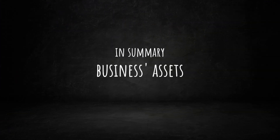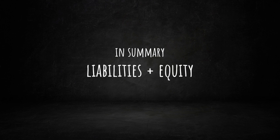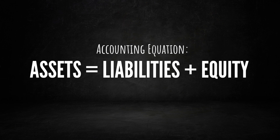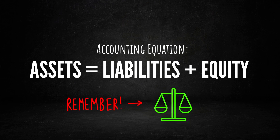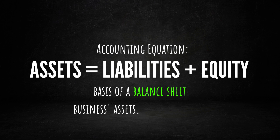In summary, we have learned that business assets are equal to its liabilities plus equity, forming the foundation of the accounting equation: assets equals liabilities plus equity. Always remember, this equation is designed to maintain perfect balance. The expanded accounting equation serves as the basis of a balance sheet, providing a snapshot of a business's assets, liabilities, and equity at a specific moment in time.